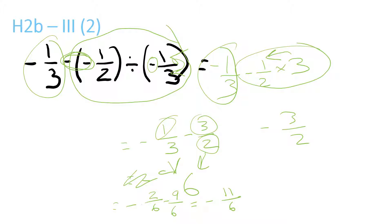If the answer is an improper fraction, write it as a mixed number. So equals minus 1 and 5 over 6 is your answer.